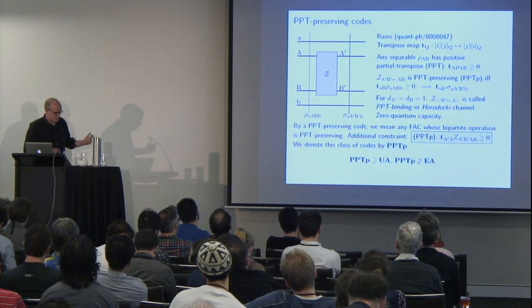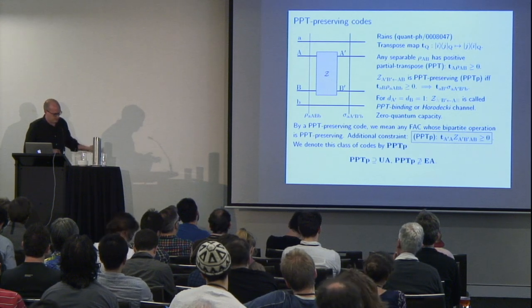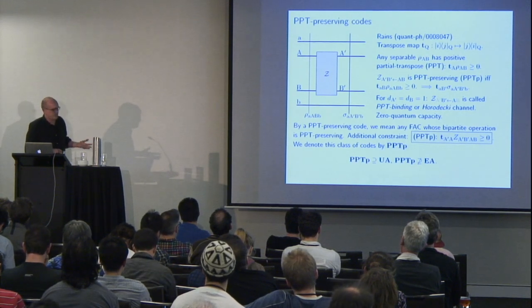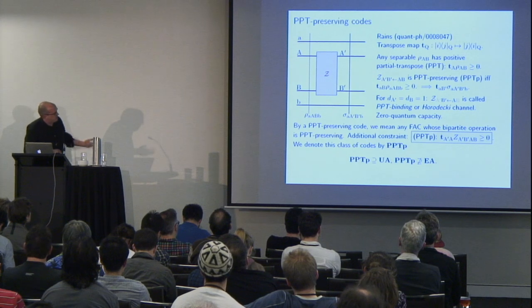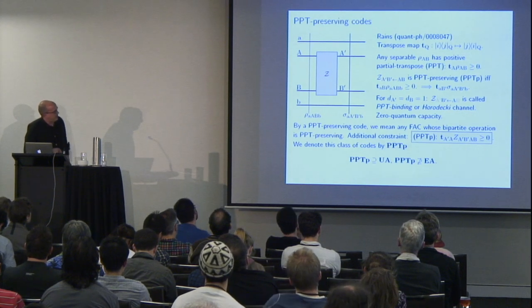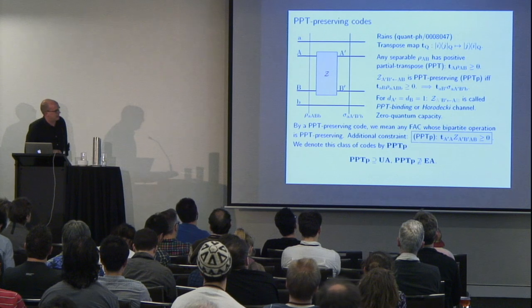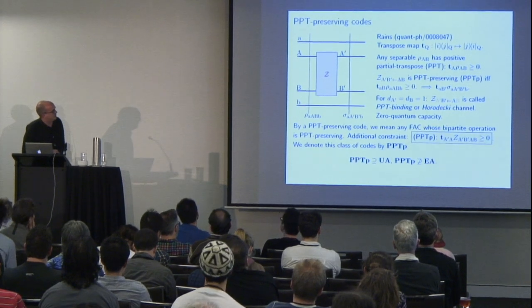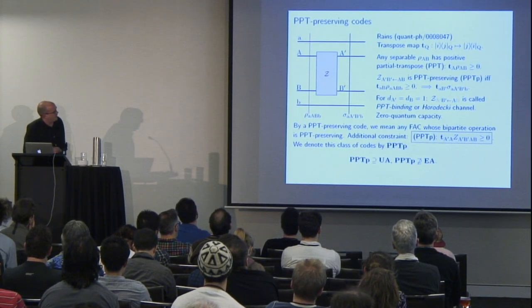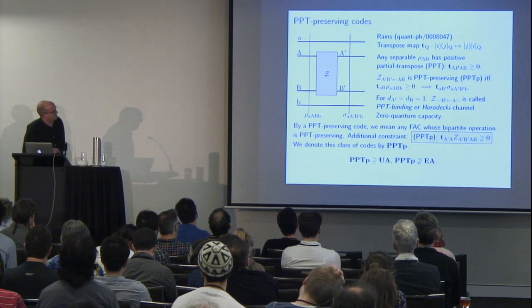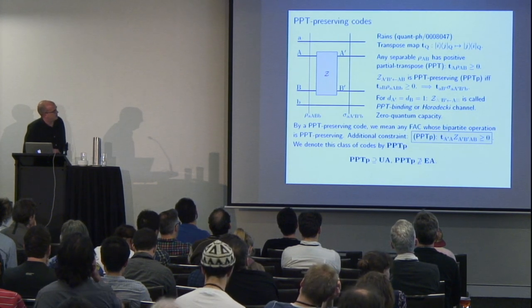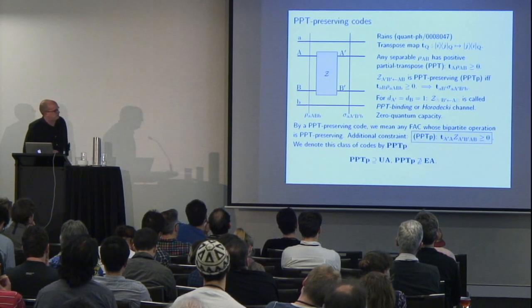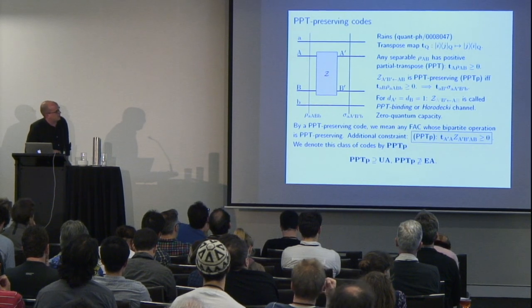This doesn't actually distinguish between entanglement-assisted and unassisted codes, which is what we want to do. So another natural constraint to add is that the bipartite operation is PPT-preserving, which certainly applies to unassisted codes. A bipartite operation Z is PPT-preserving if for any state rho that is PPT with respect to the Alice-Bob bipartition, the state that comes out is also PPT, even when we have ancillas.